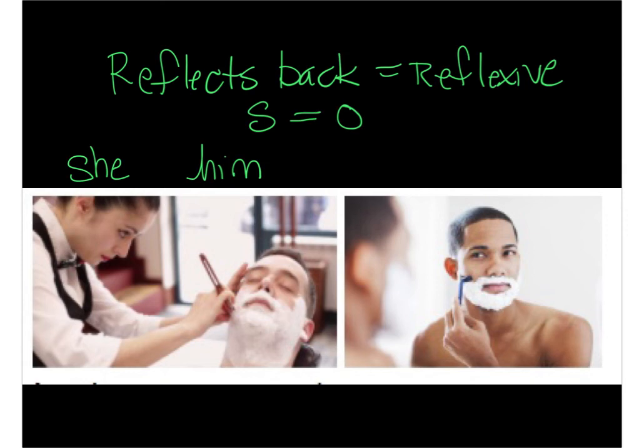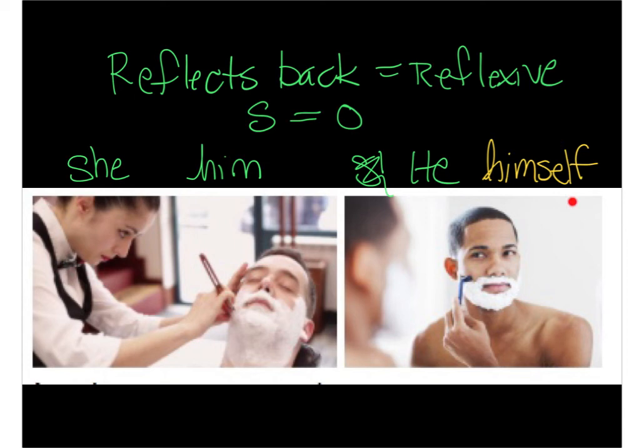We're going to change it in English and in Spanish. In English we say 'he shaves himself.' This is how we denote that the action reflects back — we add the 'self.' We don't say 'him,' we say 'himself.' So in Spanish, we're going to look at verbs that have that action.